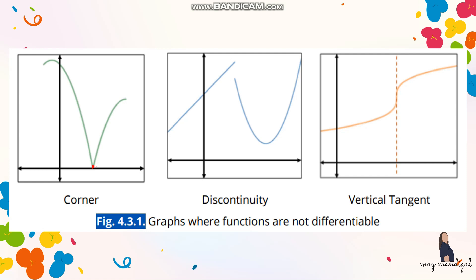If the function is discontinuous — like this second graph which has a gap — it shows discontinuity, so it is automatically not differentiable as well. A third example is a graph that is continuous but has a vertical tangent, which also makes it not differentiable.